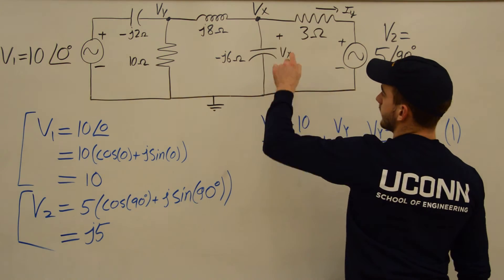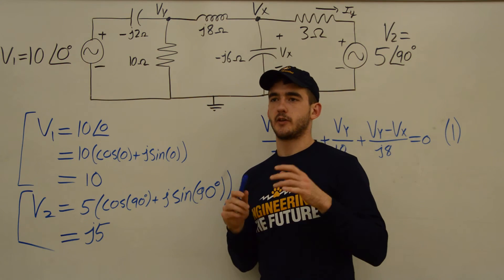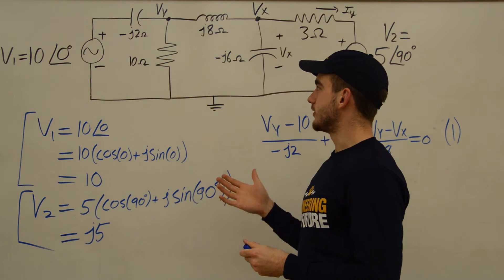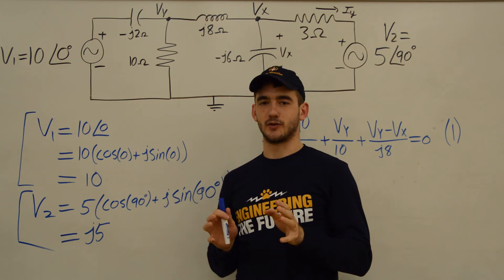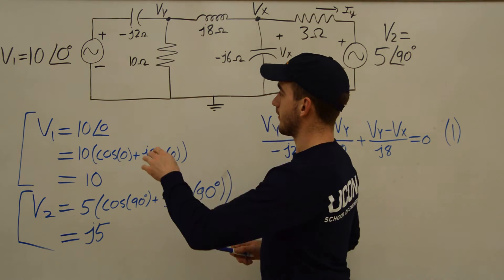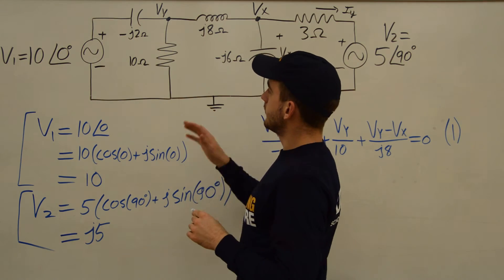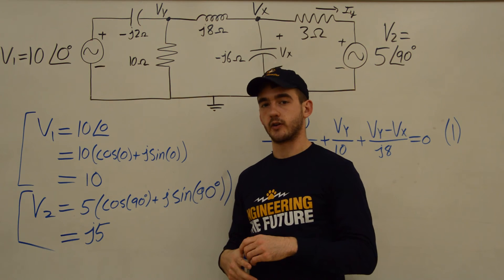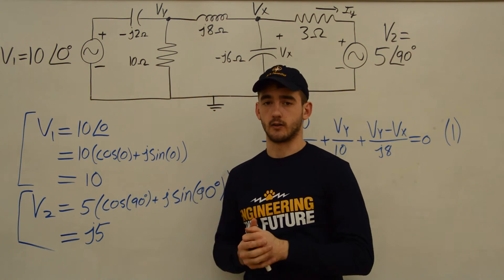And then we have Vx. So before I move forward, something I wish somebody had told me when I first started doing impedance is that you can treat impedance just like resistance when you're doing node voltage. So rather than trying to think of this like, why is it complex or whatever, just consider it to be a resistance for right now. And you can go through the circuit and solve it just as you would with a regular resistance.